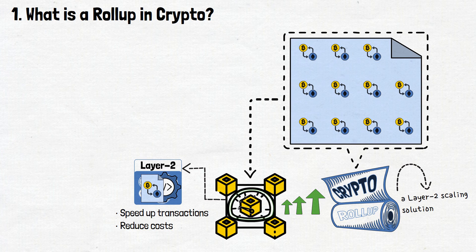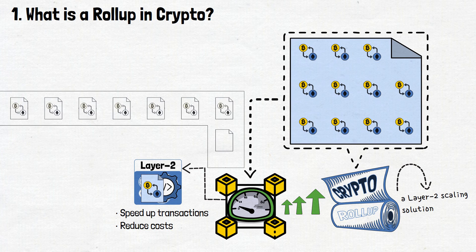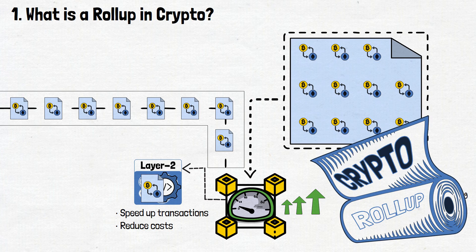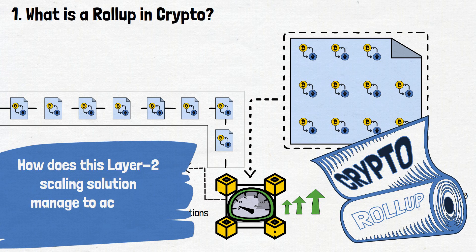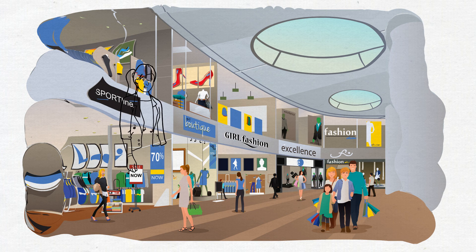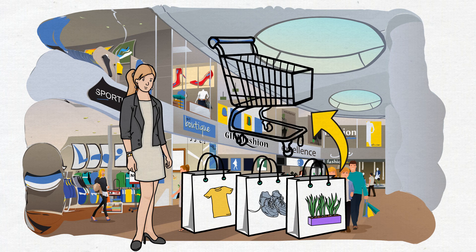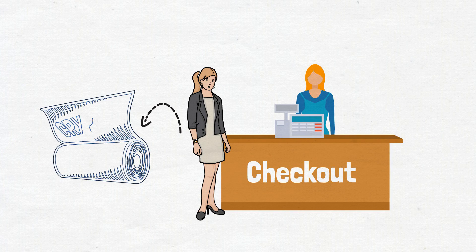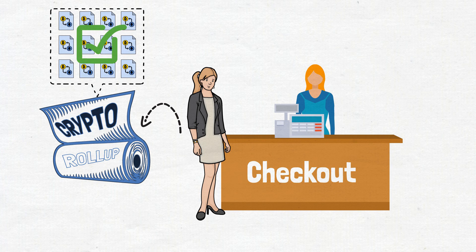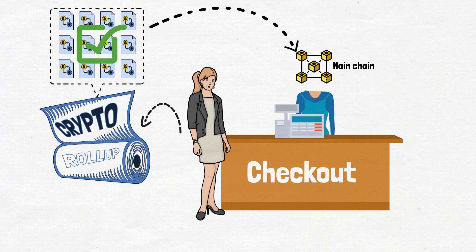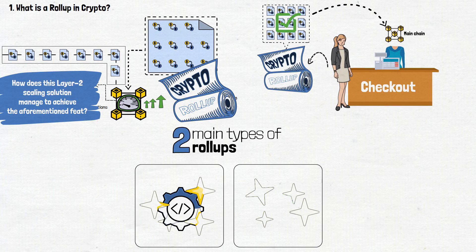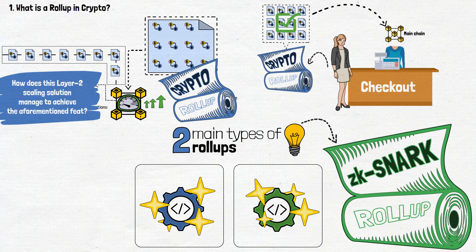This consolidation process significantly reduces the strain on the network, allowing more transactions to flow through smoothly at a faster pace. But how does this layer 2 scaling solution manage to achieve this? Picture a busy shopping mall — instead of paying for each item separately, you gather everything into one cart and head to the checkout. That's the rollup concept in action: bundling transactions together before finalizing them on the main chain. Now, there are two main types of rollups, each with its own features. Let's take some time to learn about each of them, starting with ZK SNARK rollups.